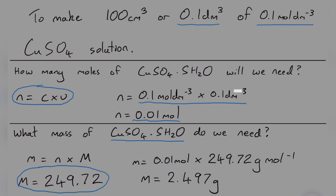To calculate the mass we use the equation: mass equals number of moles multiplied by molar mass. So 0.01 moles multiplied by 249.72 grams per mole gives us a mass of 2.497 grams. So we'll weigh out 2.497 grams of copper sulfate pentahydrate.